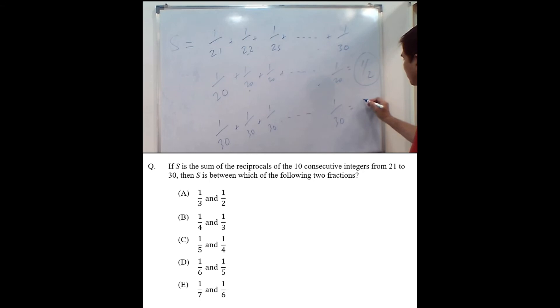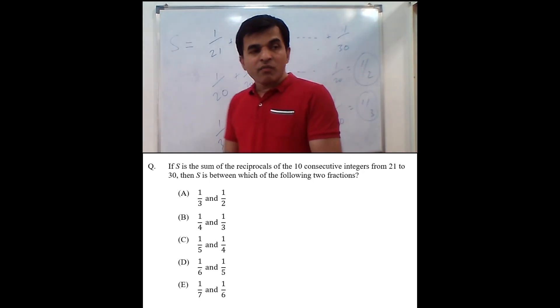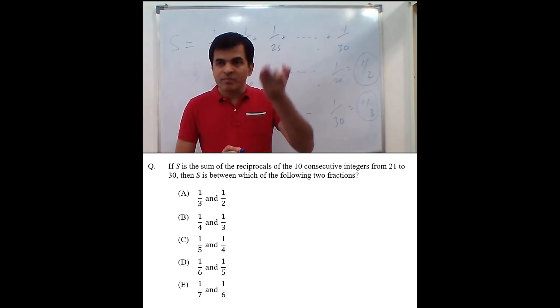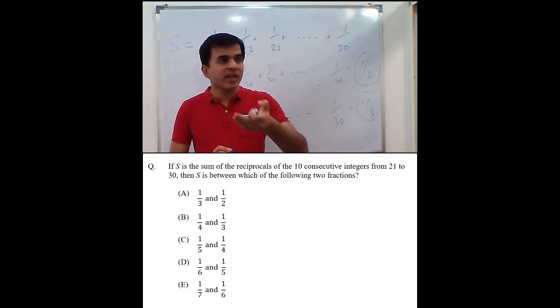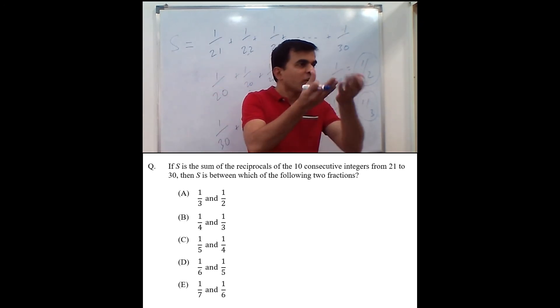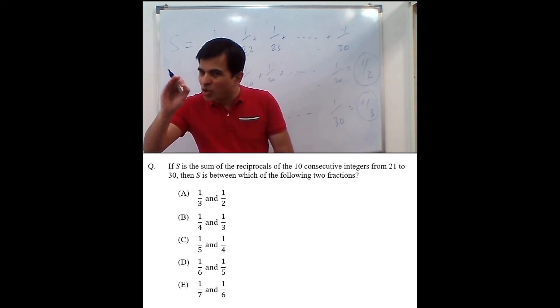Which is giving us one third. What have we done here to denominators? We have increased all of them. Instead of 21, we have taken 30. Instead of 22, we have taken 30. As you increase the denominator, the value falls. Which means we have actually reduced all the numbers slightly.